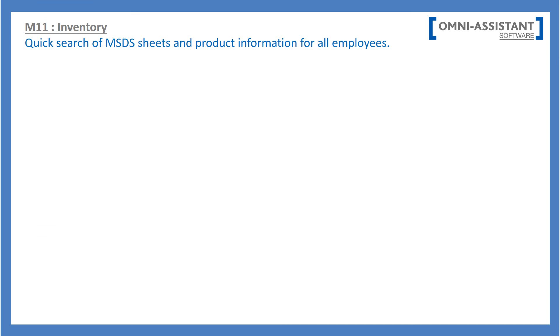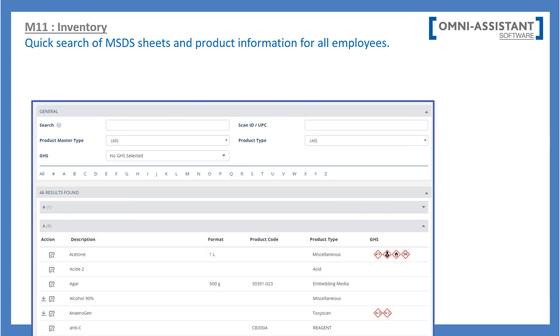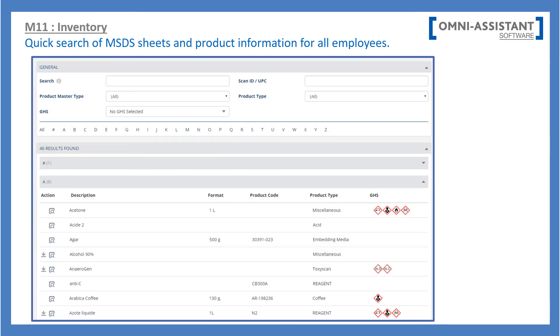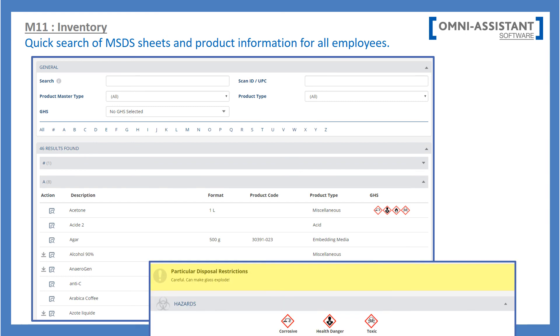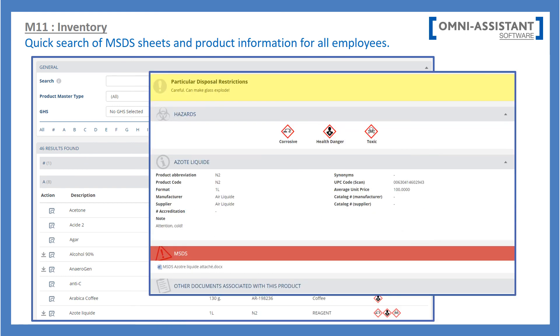Omni Assistant Module 11 allows your employees to have quick access to MSDS sheets and provides key information on how to handle and transport your products.